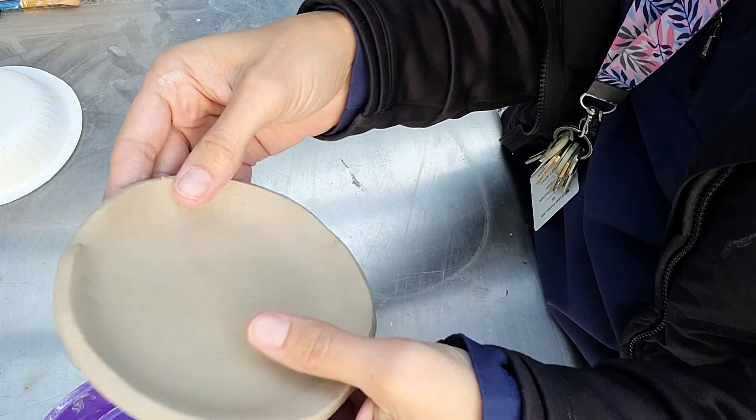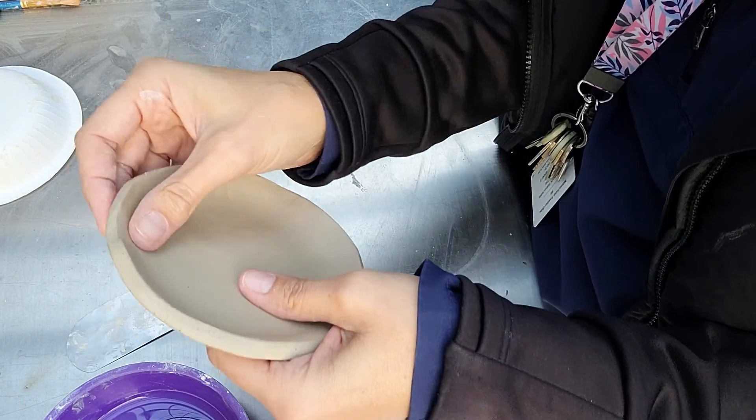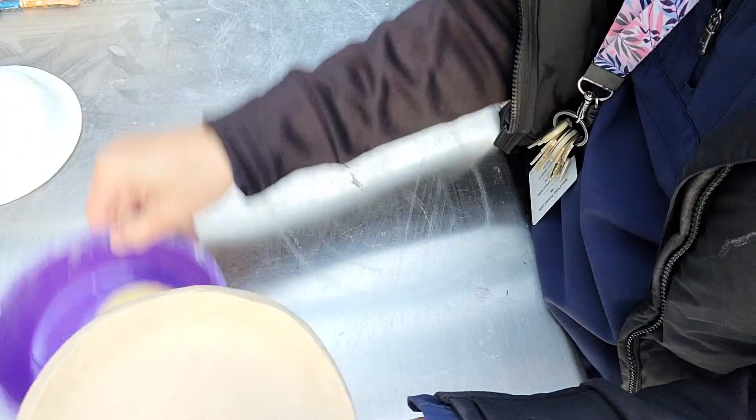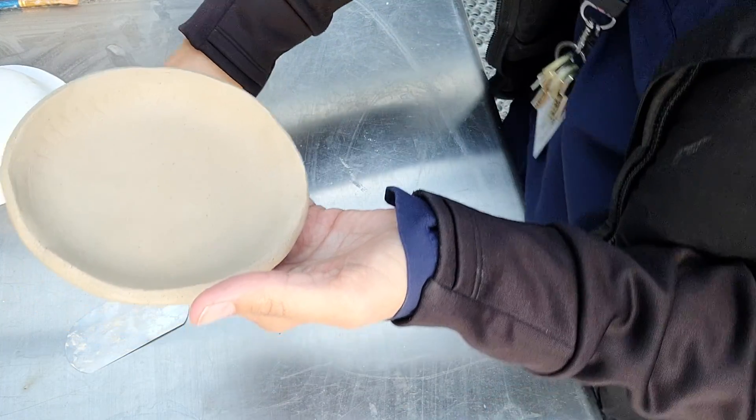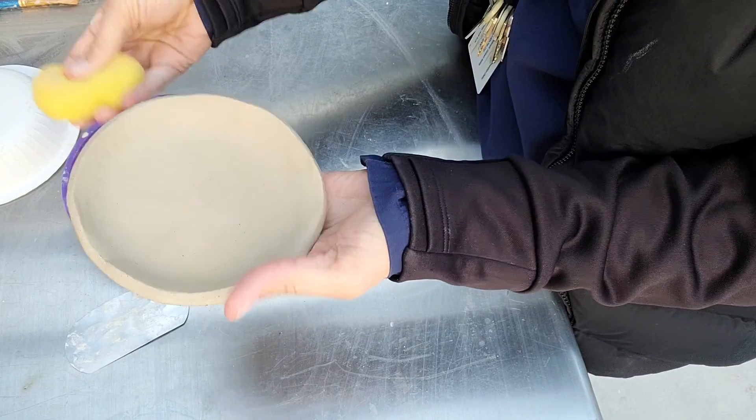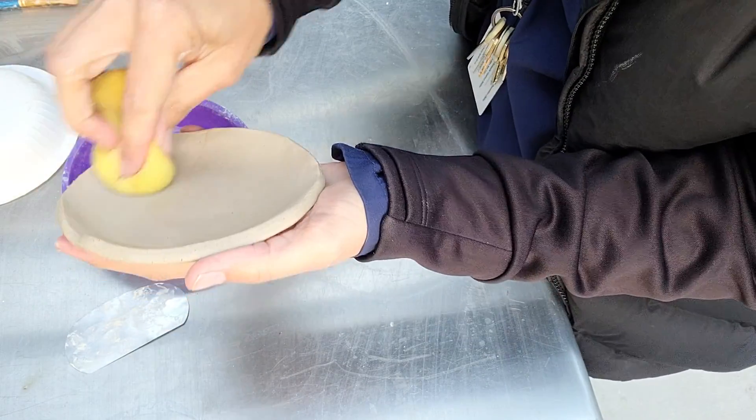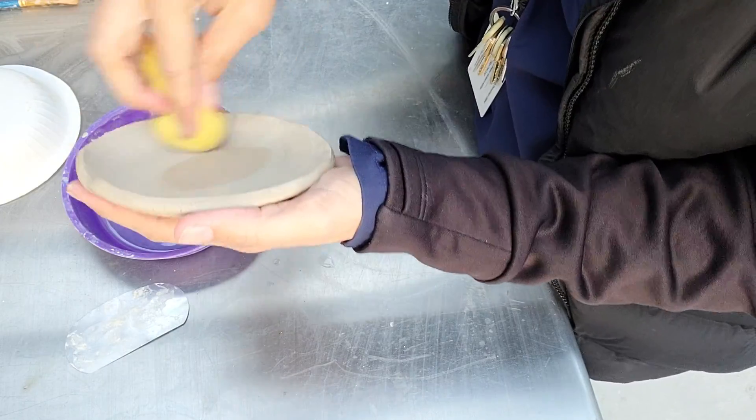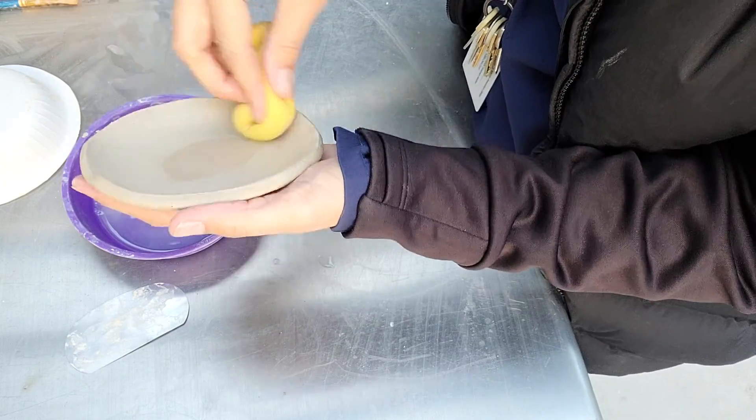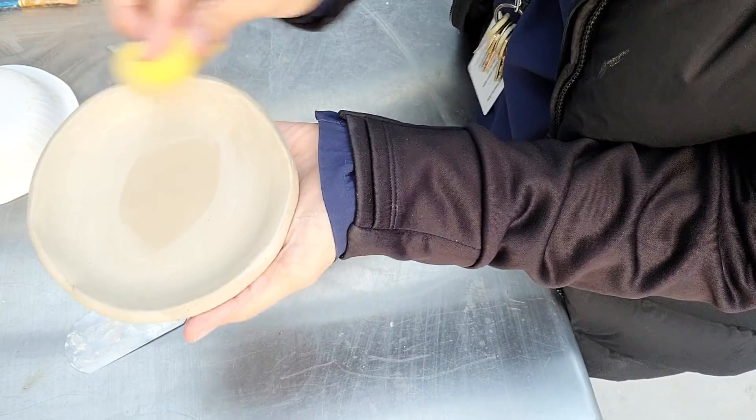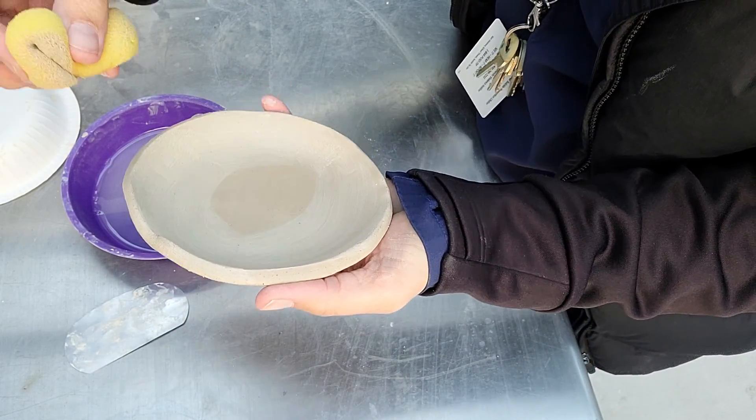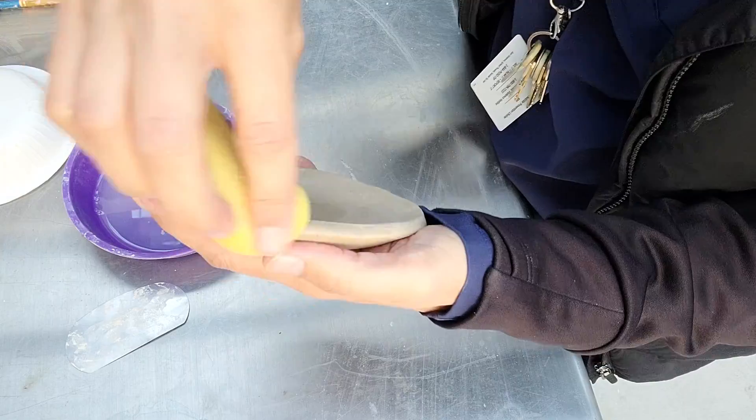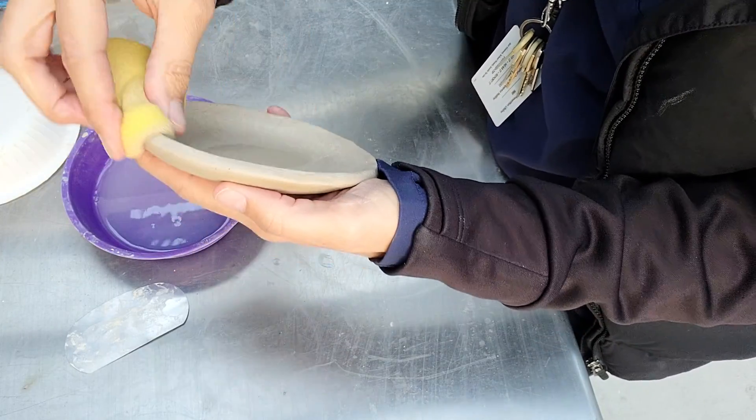To really clean this up. One of my favorite tools, of course, is the sponge—stamping out some of those little lines that the plate caused, really cleaning up this edge. Holding it like a taco and then just going over and over on this outside edge is going to really clean up any imperfections from cutting.